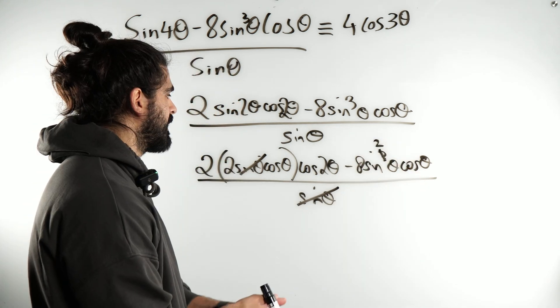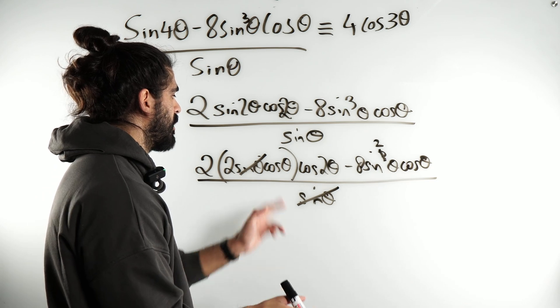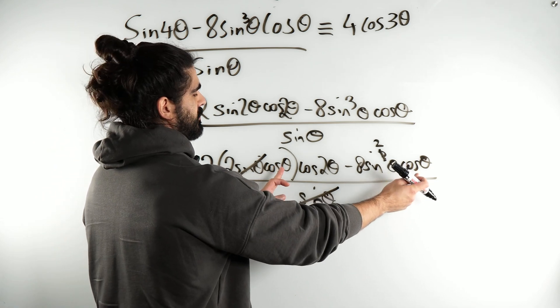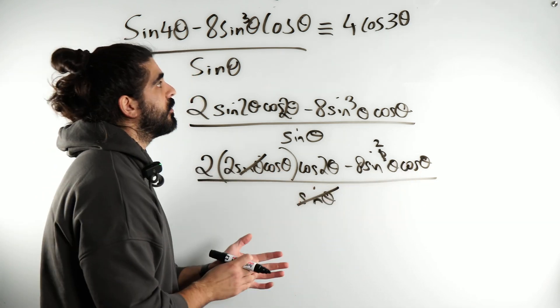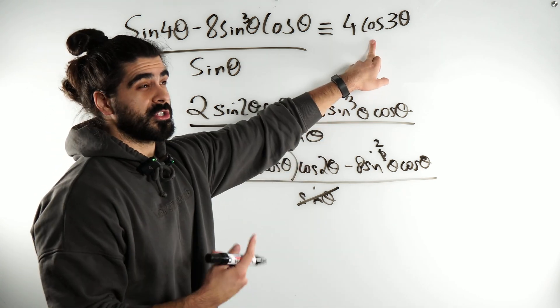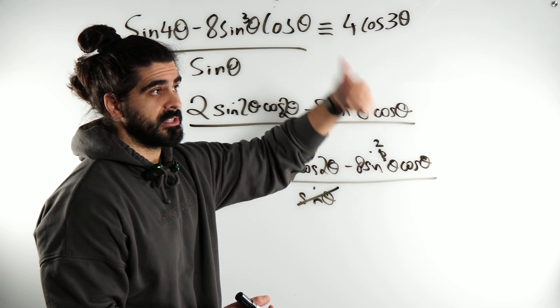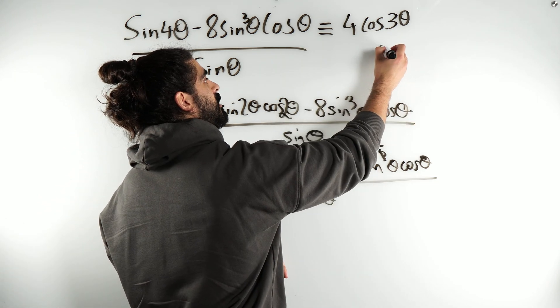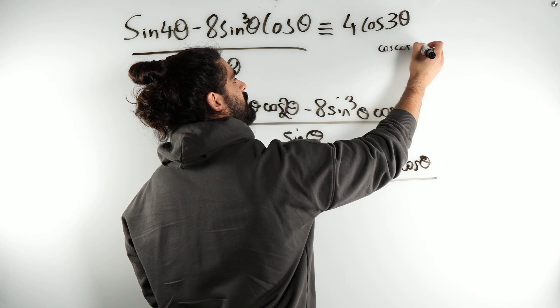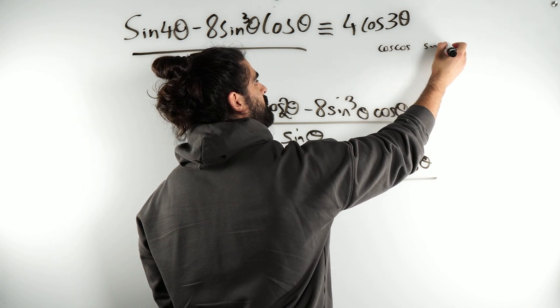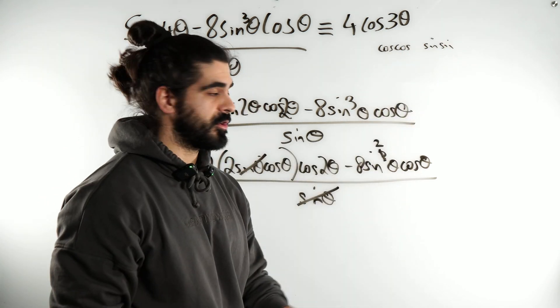Now, remember, we're still thinking about the double angle IDs. I don't want to, you can see that there's this cos theta, right? I don't want to factorize it out because I'm thinking about cos 3 theta. I'm looking for cos cos sine sine. Remember the addition rule for cos? It goes cos cos minus or plus sine sine. That's the kind of form I'm looking for here.